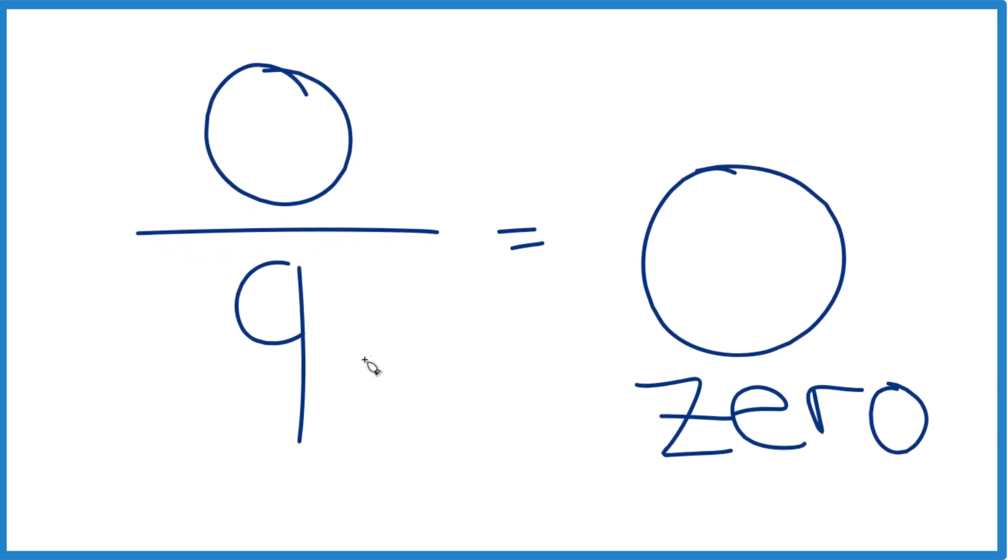So zero divided by nine, that equals zero. And in fact, zero divided by any number is gonna equal zero, with just one exception. And that's if you have zero divided by zero, we call that undefined.